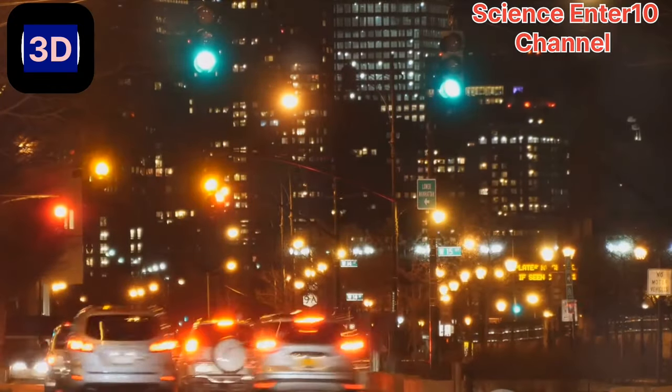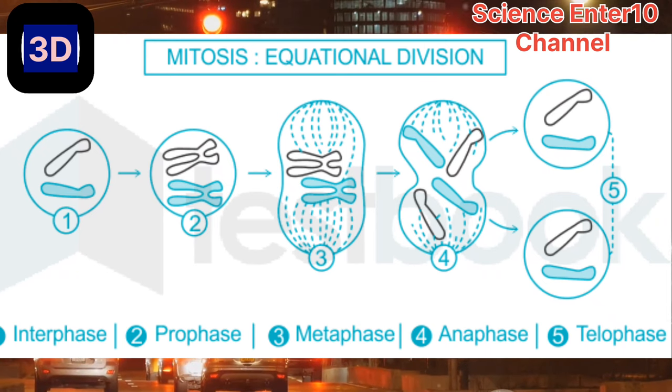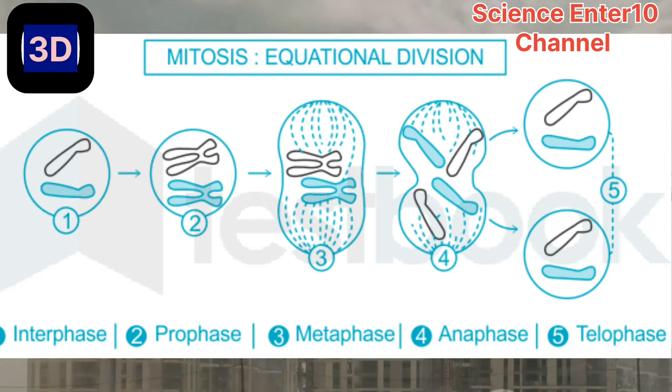Before a cell can divide, it needs to prepare itself. This phase is known as interphase. Imagine a cell as a city. The first stage, or the G1 phase, is when the city expands. The cell grows in size, creating more room for the upcoming division.